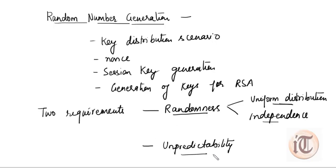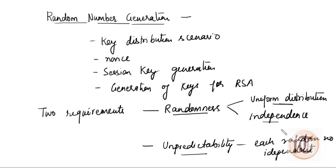The second requirement for a random number is unpredictability. Unpredictability means that each random number should be independent of each other. So if all numbers in the sequence have a uniform distribution, no one number can be inferred from the others, and each random number is independent of the others, then that number is called a random number.